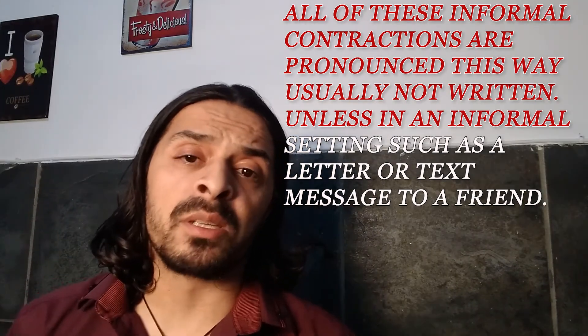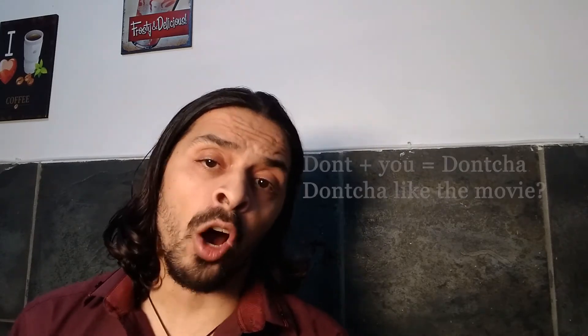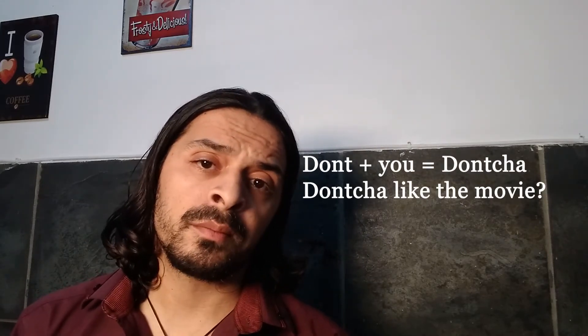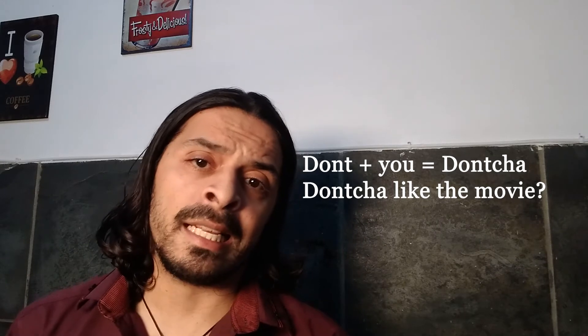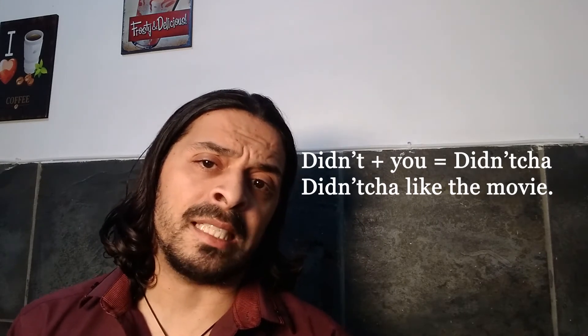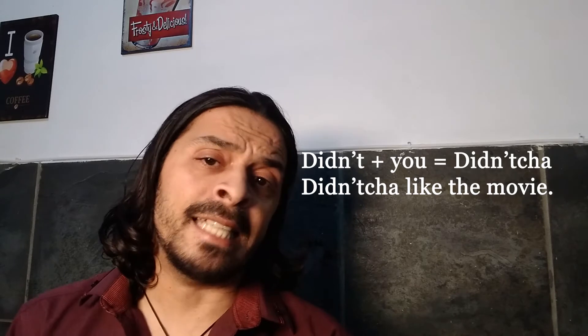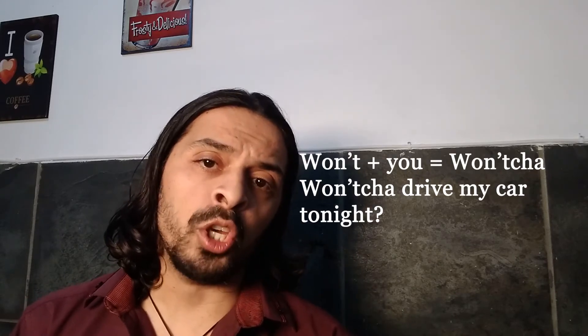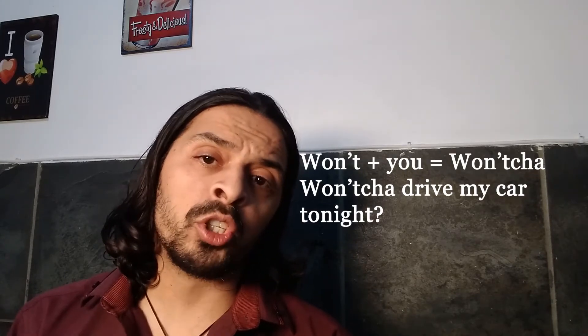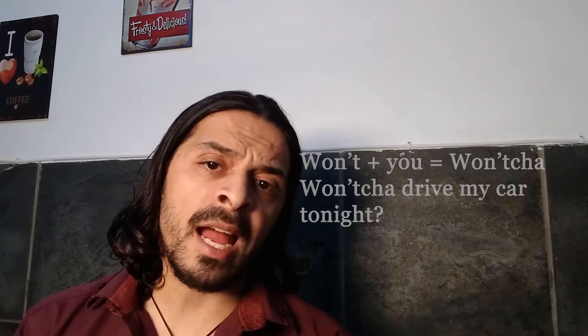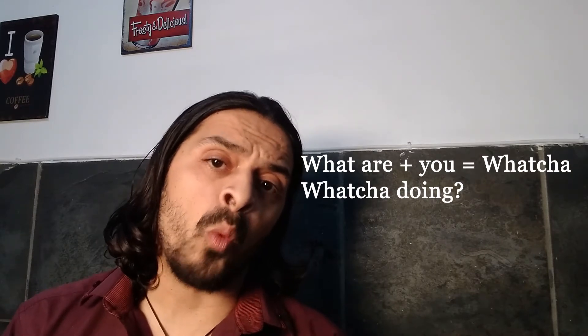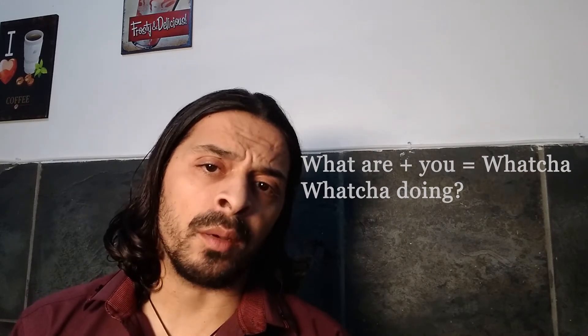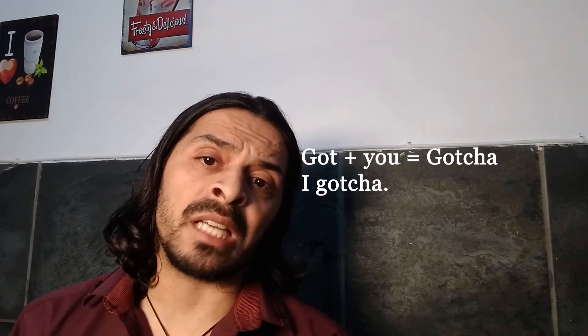Now we're going to cover some contractions with the word 'you.' 'Don't you' becomes 'doncha' — example: 'Don't you like the movie?' 'Didn't you' becomes 'didntcha' — 'Didn't you like the movie?' 'Won't you' becomes 'woncha' — 'Won't you drive my car tonight?' 'What are you' becomes 'whatcha' — 'Whatcha doing?'